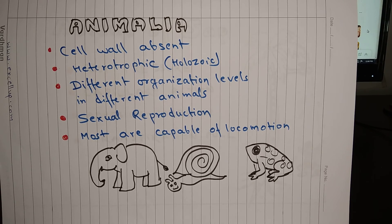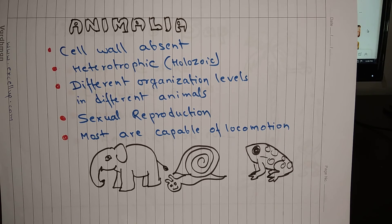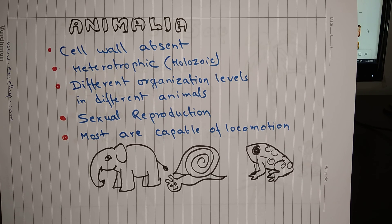To recapitulate: I talked about prokaryotes and eukaryotes, then unicellular and multicellular living beings, then the key features of the five kingdoms — Monera, Protista, Fungi, Plantae, and Animalia. That's all for this lesson, thank you.